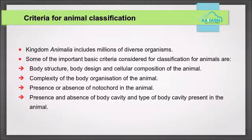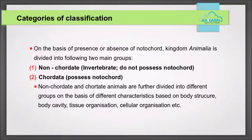Presence and absence of body cavity and the type of body cavities present in the animal are also important criteria. On the basis of presence or absence of notochord, Kingdom Animalia is divided into two main groups: Non-Chordata, which do not possess notochord, and Chordata, which possesses notochord. These are further divided into different groups on the basis of body structure, body cavity, tissue organization and cellular organization.